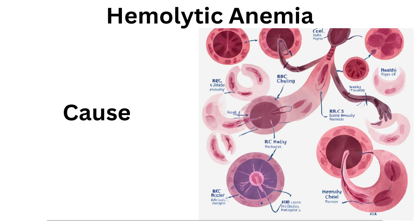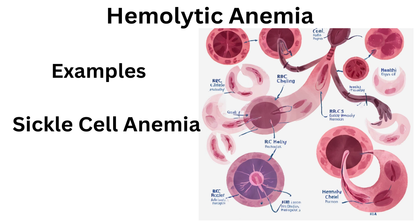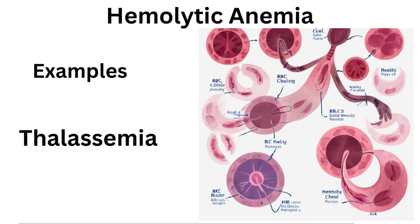Hemolytic anemia results from the premature destruction of red blood cells due to intrinsic factors within the red blood cell or extrinsic factors. Symptoms include fatigue, jaundice, dark urine, and an enlarged spleen. Thalassemia is a group of inherited blood disorders that lead to reduced hemoglobin production.